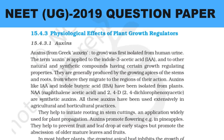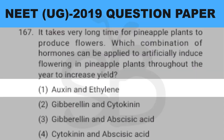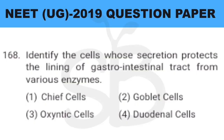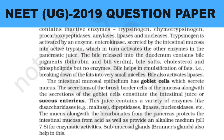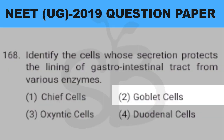Question number 168: identify the cells whose secretion protects the lining of the gastrointestinal tract from various enzymes. This answer is from plus 1 biology, digestion and absorption, page number 263. So the answer is option 2: goblet cells.